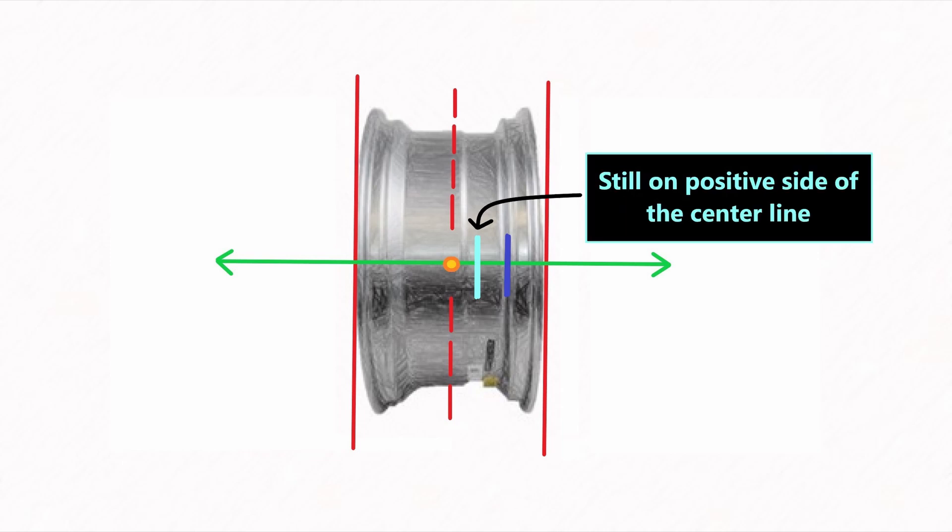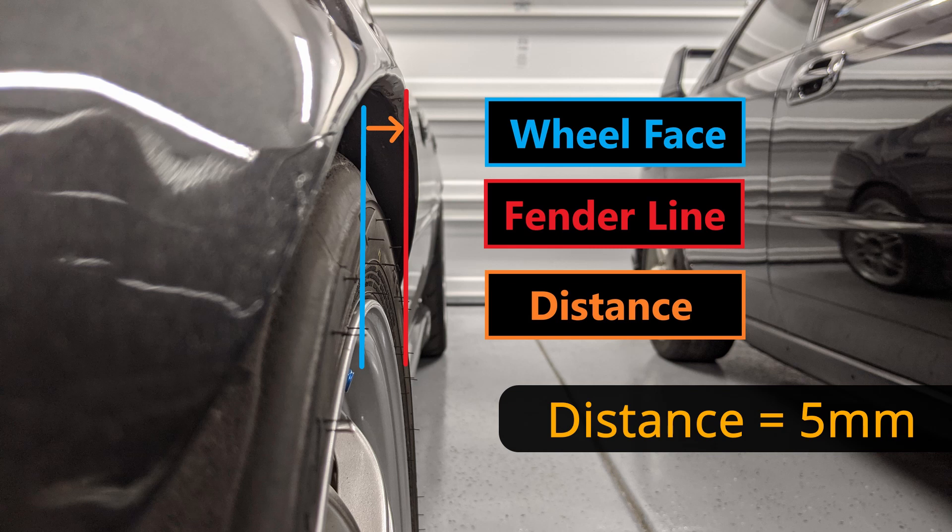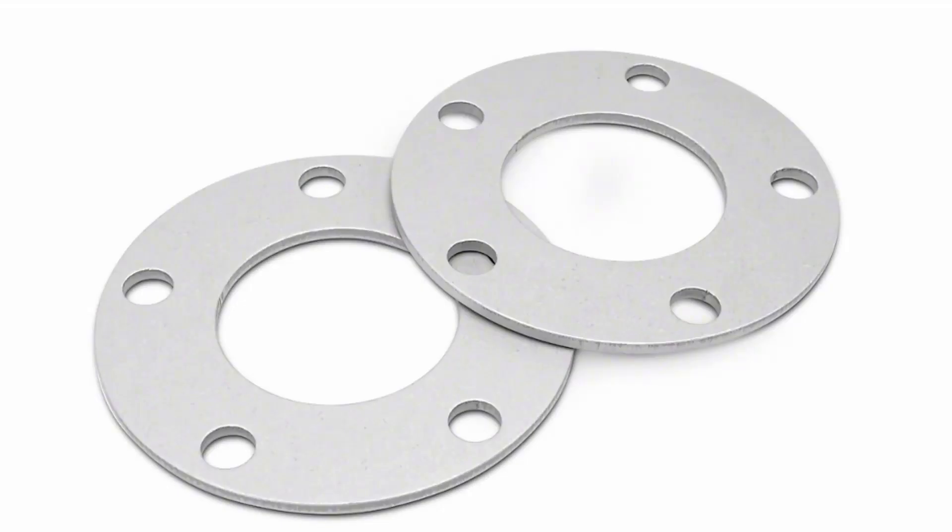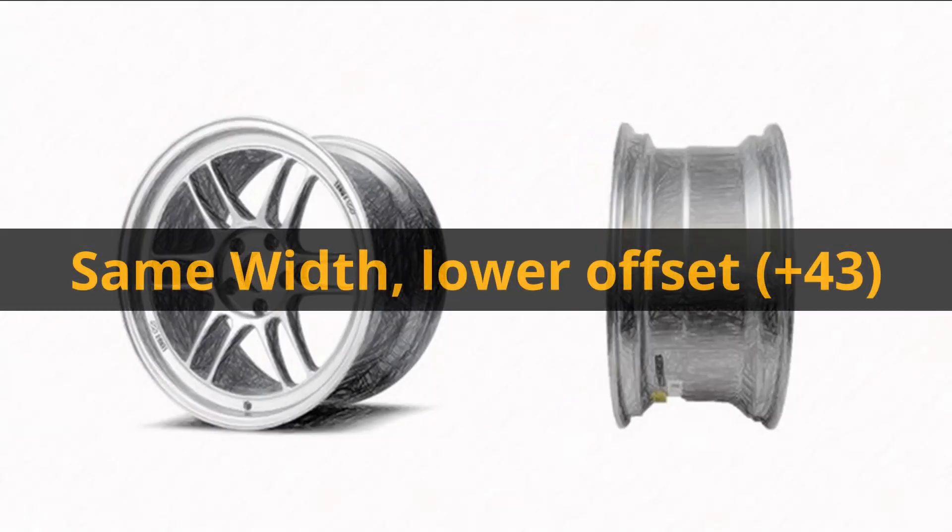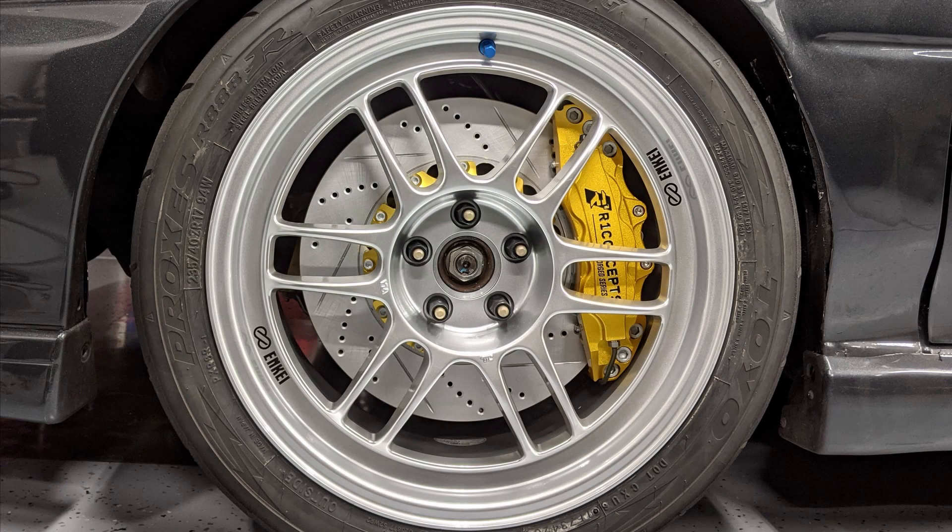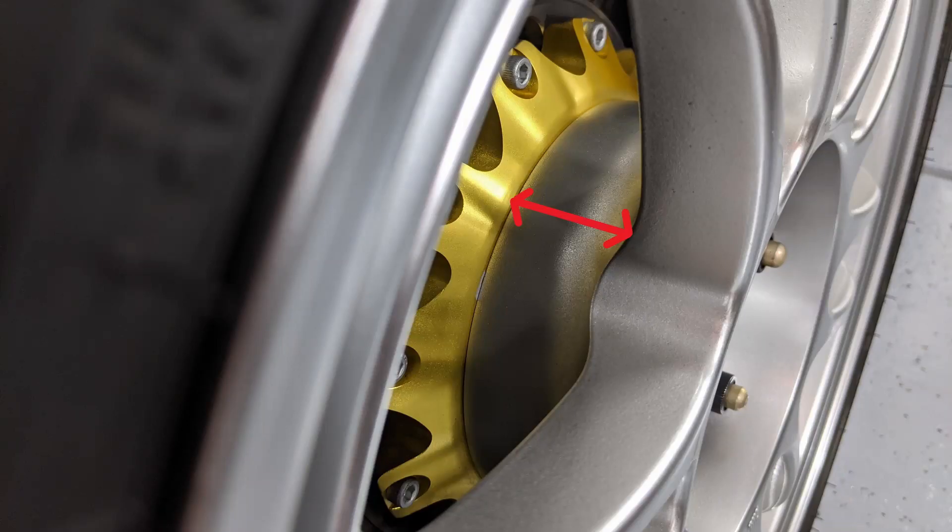Having a lower offset can make the wheels poke out past the fender. For example, let's say that this gap is five millimeters. If I wanted my wheel to meet the fender or be flat with the fender, I would decrease my offset by five millimeters. I would either order five millimeter spacers or new wheels with a plus 43 millimeter offset.